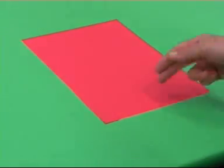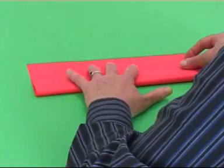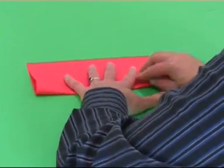The first fold is along the long line of symmetry. Fold long side to long side, matching the sides and unfold.